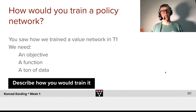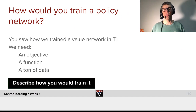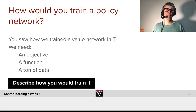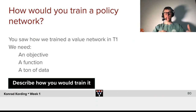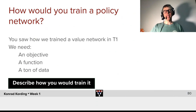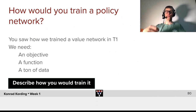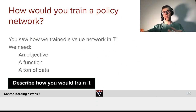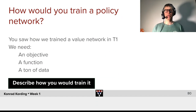How would you train a policy network? You saw how we trained a value network last time in the first tutorial of the week. What do we need? We need an objective function, because that's what you will be optimizing for. We need a neural network that ultimately produces a policy as a function of the input. And then we need a ton of data. Now describe how you would train such a network.